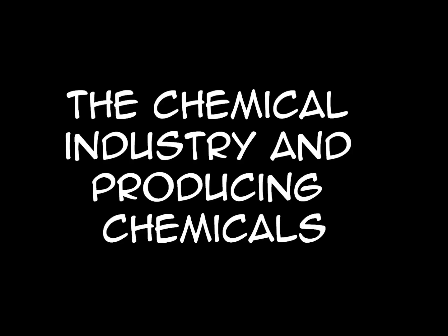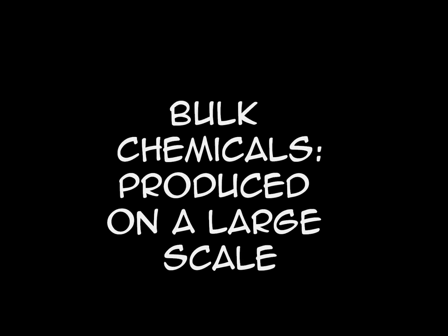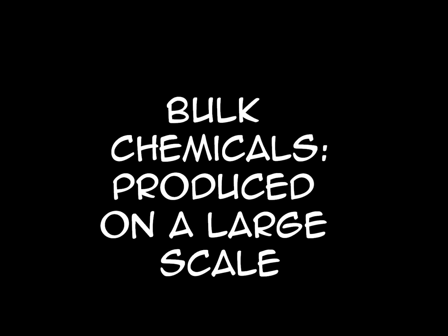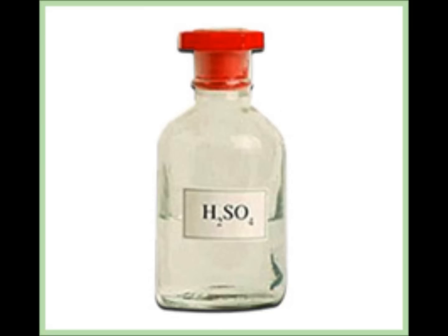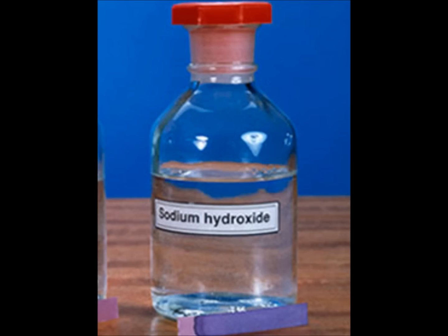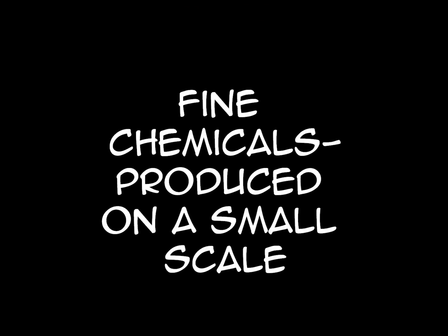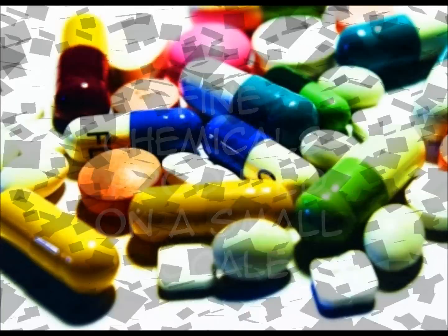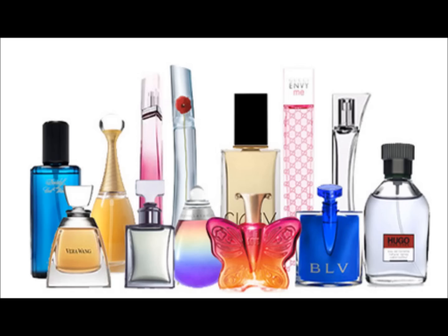There are two types of chemicals produced in the chemical industry. Bulk chemicals are produced on a large scale and include ammonia, sulfuric acid, phosphoric acid, and sodium hydroxide. Fine chemicals are produced on a small scale and include drugs, food additives, and fragrances.